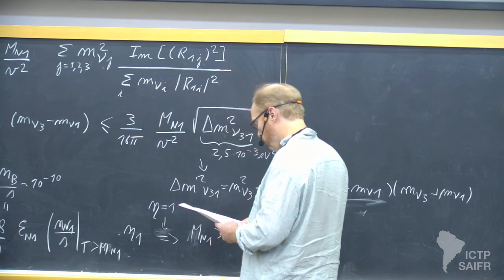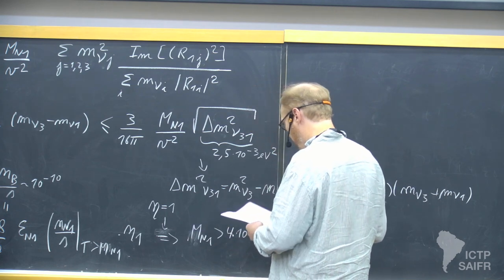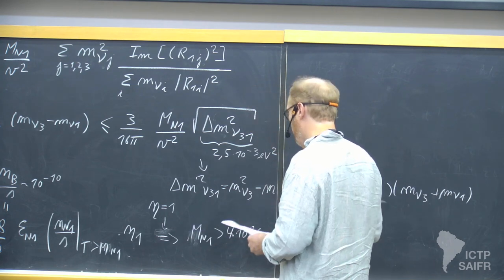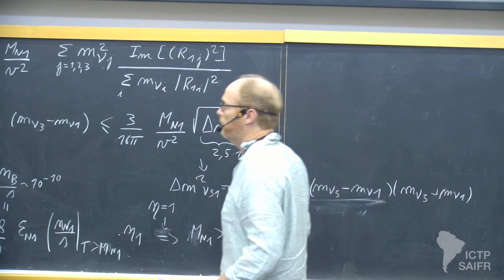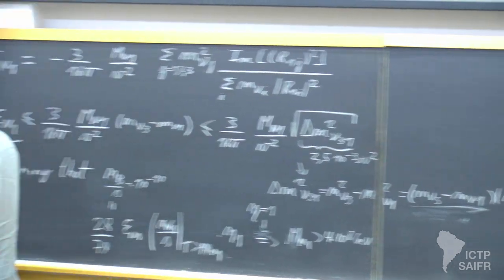So you see that if you have a hierarchical spectrum of right-handed neutrino masses, you need the mass to be quite big. This is quite nice because we know from neutrino masses that if we want to explain neutrino masses of order 0.1 eV or less, and if the mass is above this scale, the seesaw is fully operative. This scale is determined by the observed baryon asymmetry.